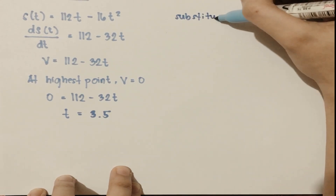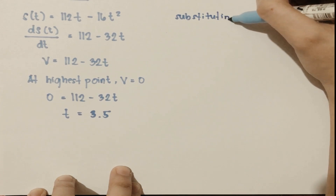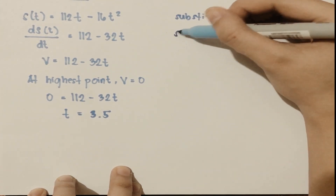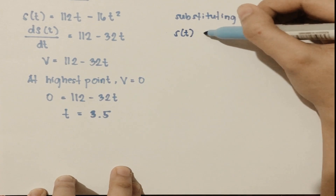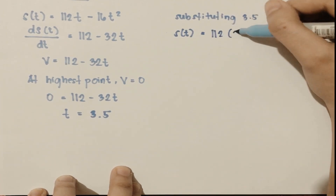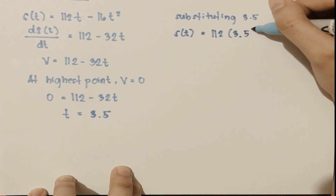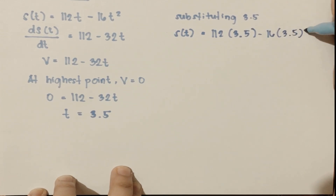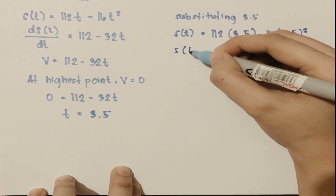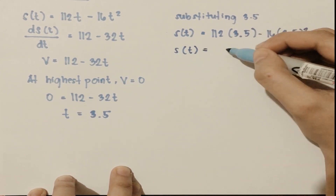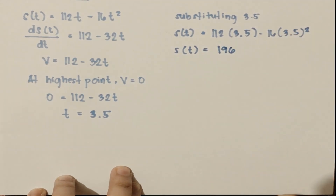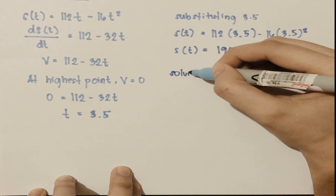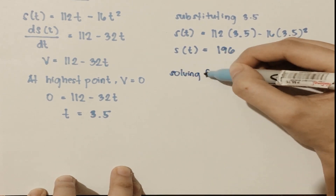Substituting time equal to 3.5 on the original distance equation, we will have 112 times 3.5 minus 16 times 3.5 squared, which results in 196. This is the distance traveled by the ball upwards. Next, solving for the time t when the stone hits the ground.